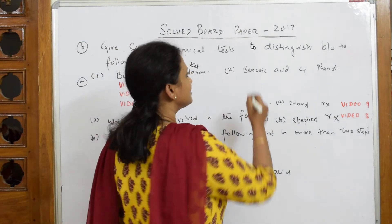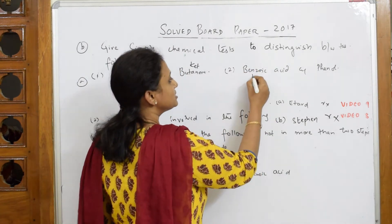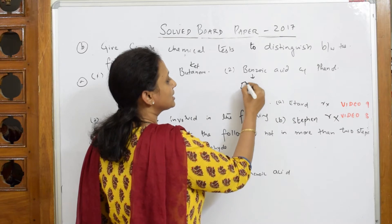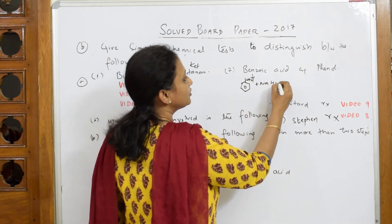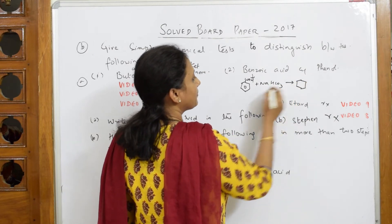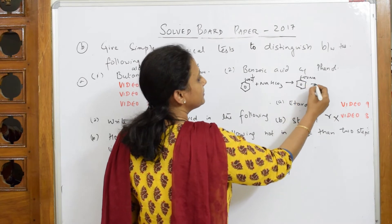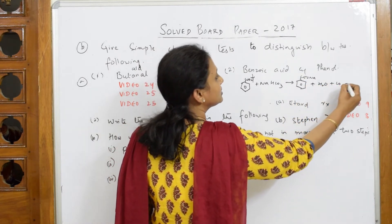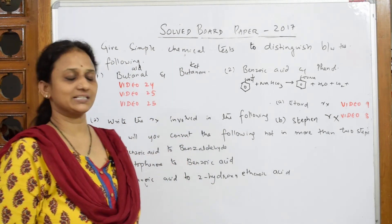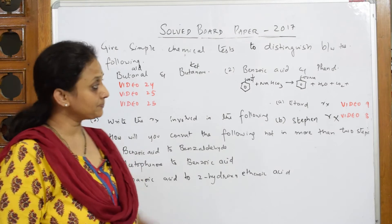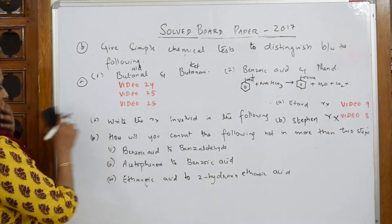When I come back to benzoic acid and phenol - I did this reaction many times. Benzoic acid responds to sodium bicarbonate: it combines with NaHCO3 and forms sodium benzoate plus carbon dioxide plus water. This carbon dioxide forms effervescence which indicates the presence of benzoic acid. Phenol does not respond to sodium bicarbonate. This is your first question.